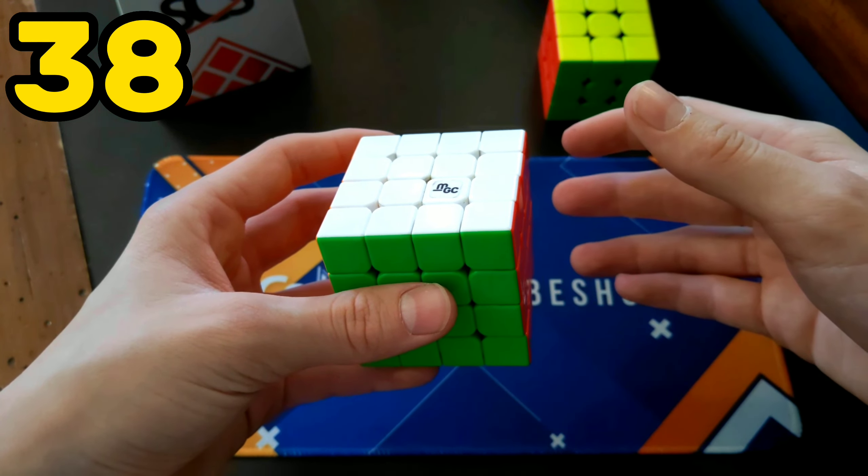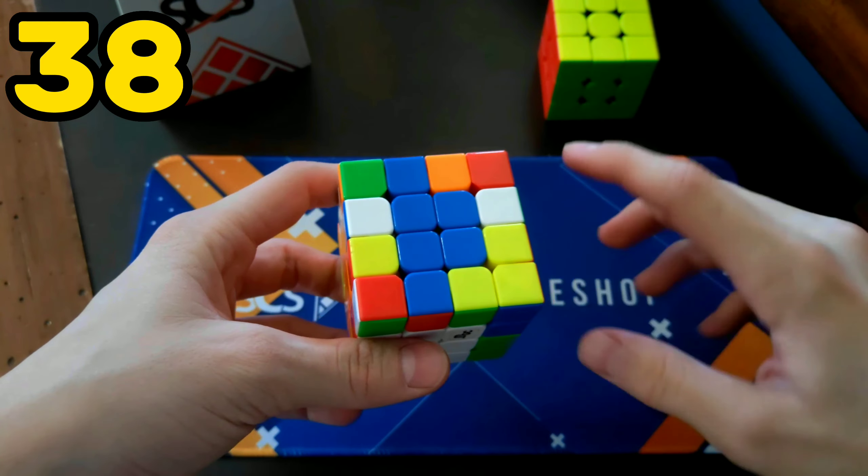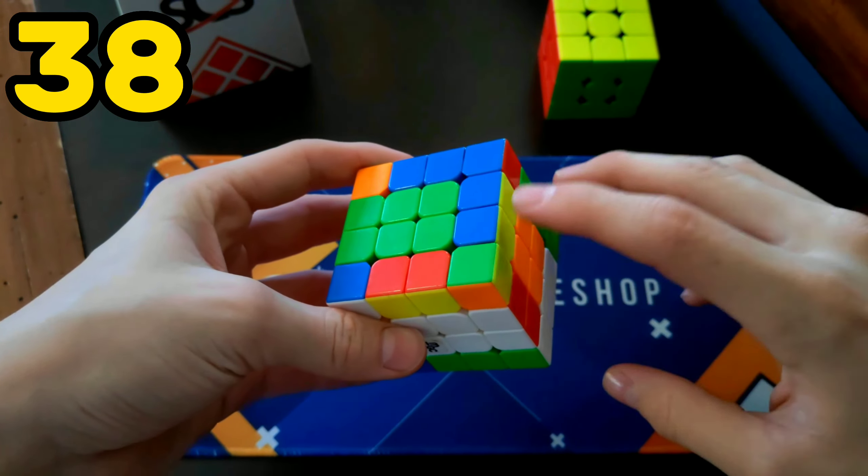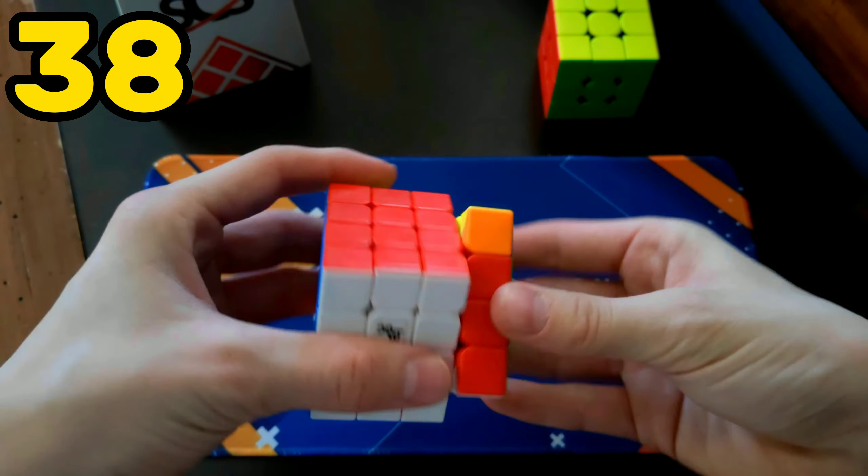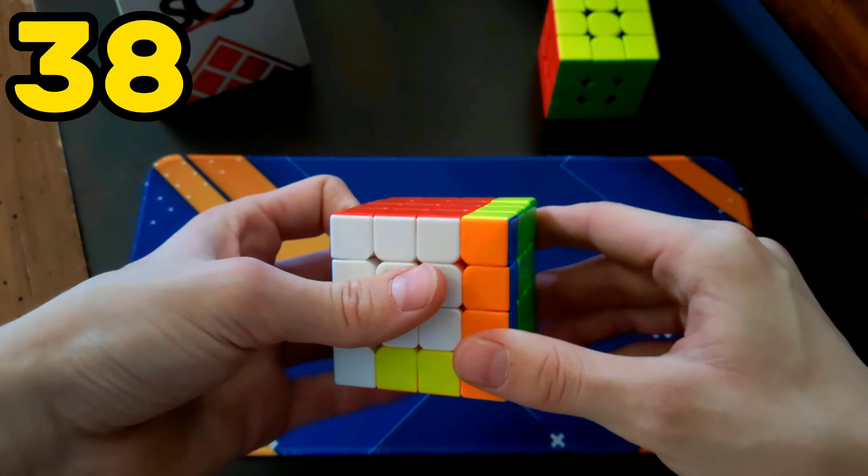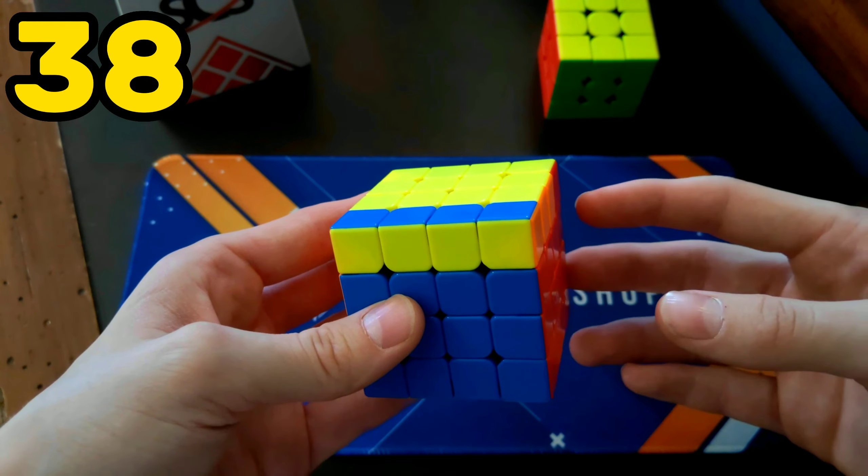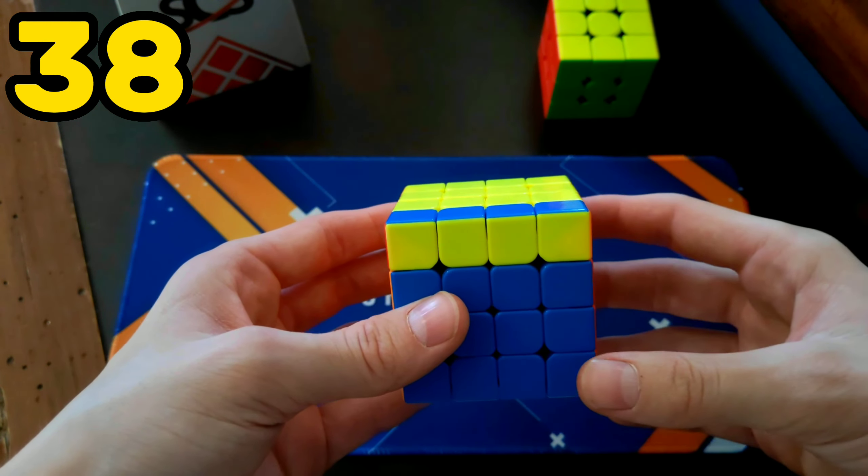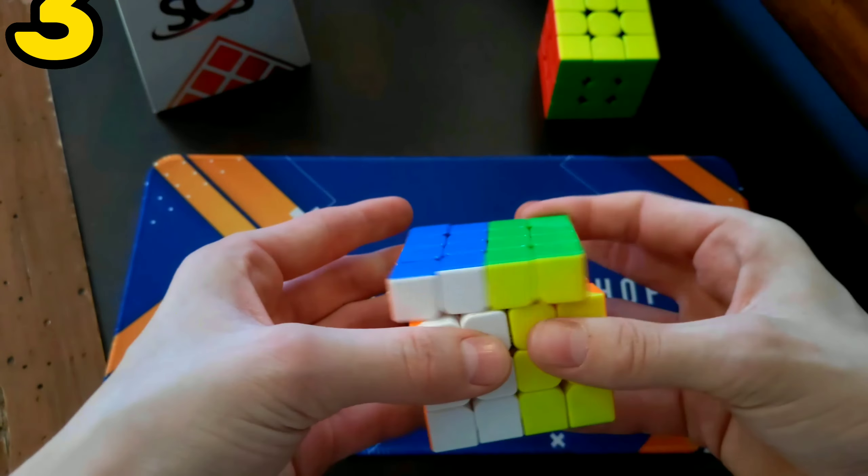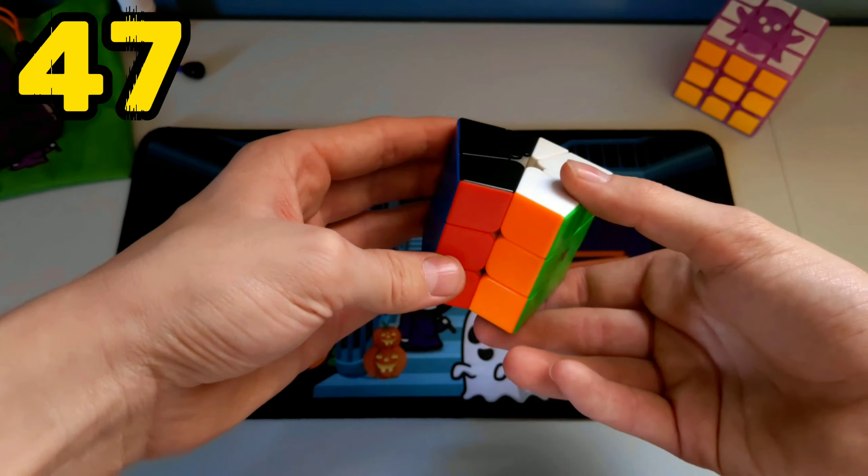4x4 is basically a 3x3, but with a few extra steps. Step 1 is solving the centers. Step 2 is pairing the edges. And step 3, you guessed it, 3x3 stage. But sometimes it gives you parity, which is basically an unsolvable state that requires a really long algorithm to solve.